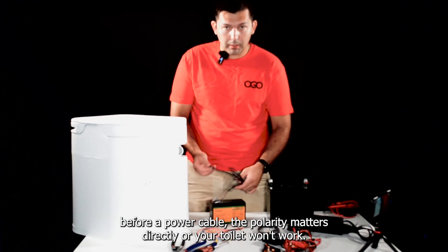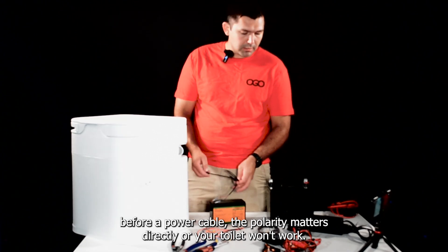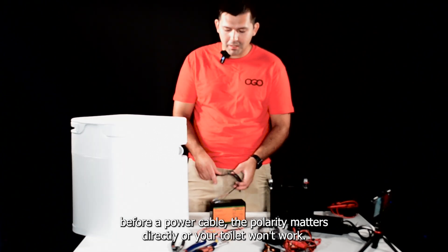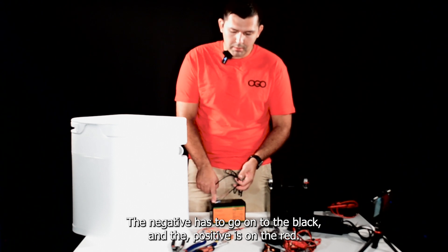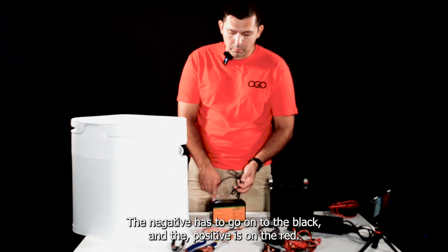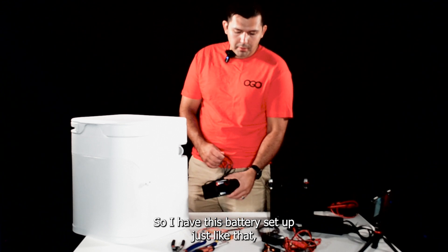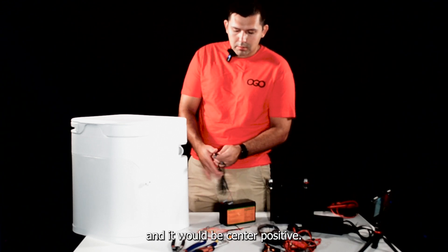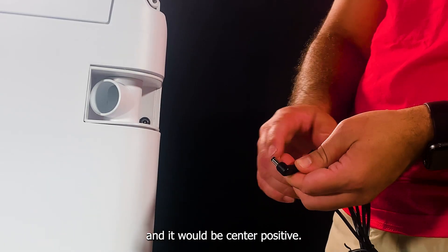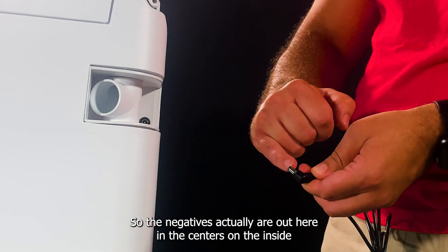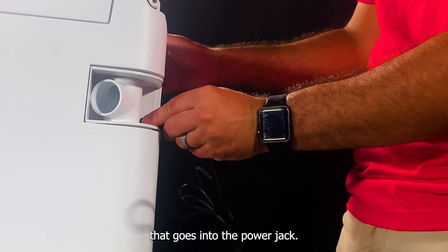So for a power cable, the polarity matters significantly or your toilet won't work. The negative has to go on to the black and the positive is on the red. So I have this battery set up just like that, and it would be center positive. So the negative is actually around here and the center is on the inside. That goes into the power jack.